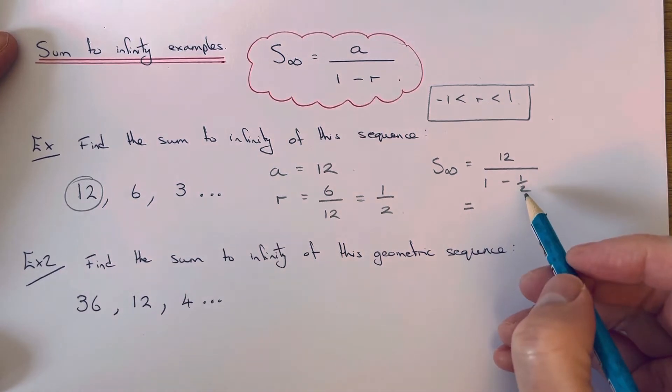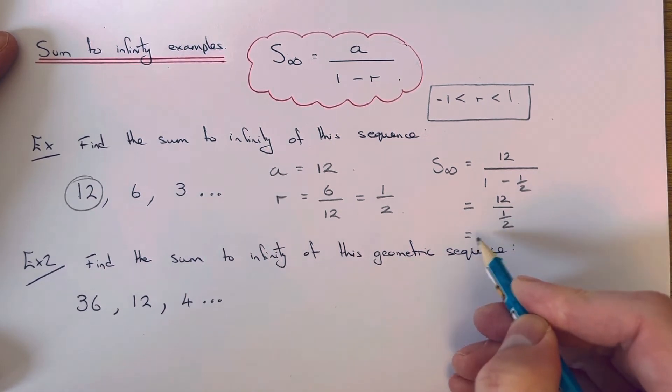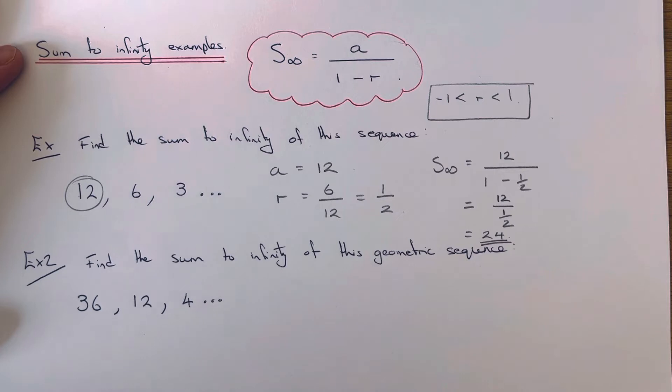So it'll be 12 over 1 minus a half. We can do this without a calculator because 1 minus a half is a half, so it's 12 divided by a half, and it will just double 12 which is 24. So that is the sum to infinity.